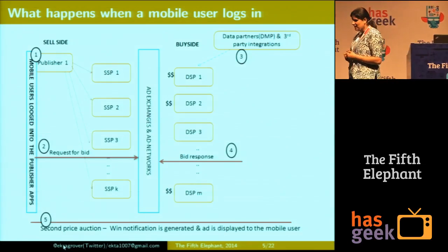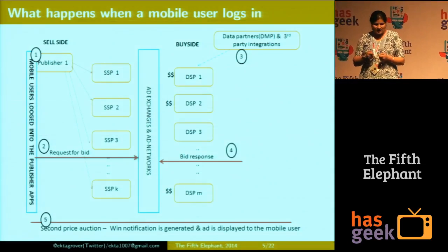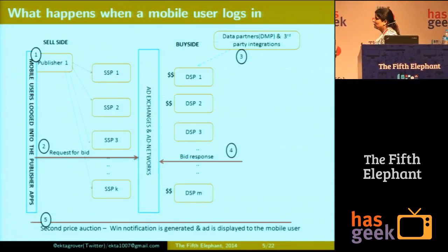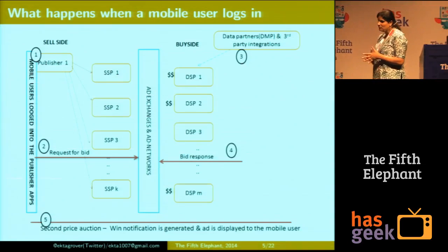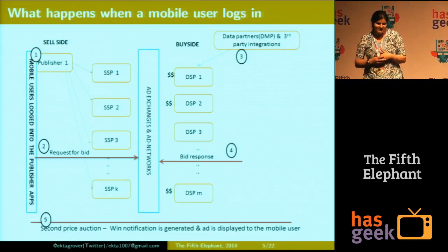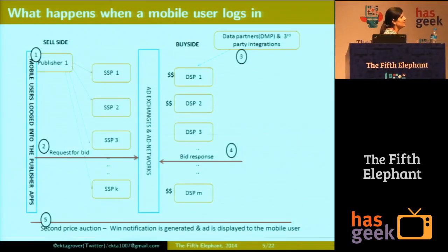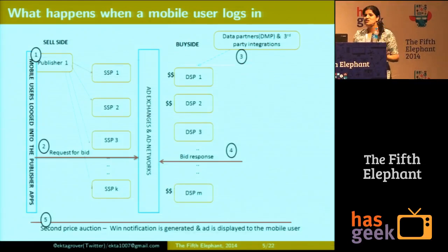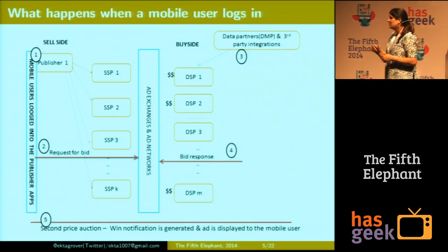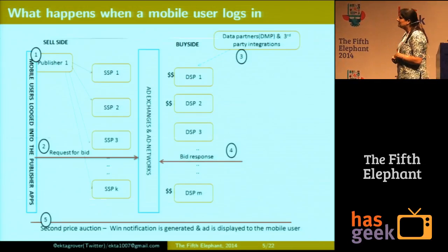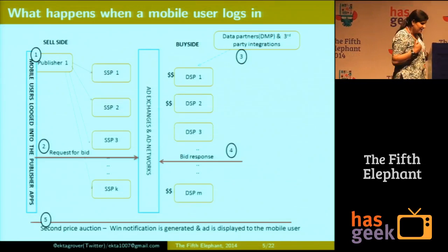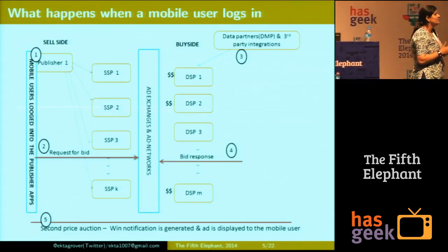When a mobile user logs into an app, there's a slot up for sale — that's the inventory in this context. The publisher signals to the SSP to request a bid for this slot. This is an auction because there's one slot and multiple potential buyers — DSP-1, DSP-2, and DSP-M. Post receiving this bid request from the ad exchange, the DSPs evaluate the quality of the bid and send a bid response containing the actual creative and the price. This is a second-price auction, meaning the DSP that bids the highest wins, but pays only the second highest price.